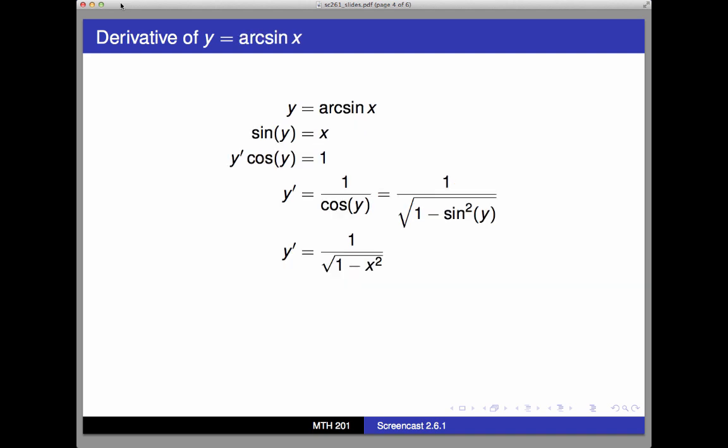we can apply the same process to find the derivative of y equals arc sine of x. When we write y equals arc sine of x, what we mean is that x is the angle whose sine is y. That is, sine of y equals x. Differentiating both sides with respect to x here gives us y prime times cosine y equals 1, and so y prime is equal to 1 over cosine of y.